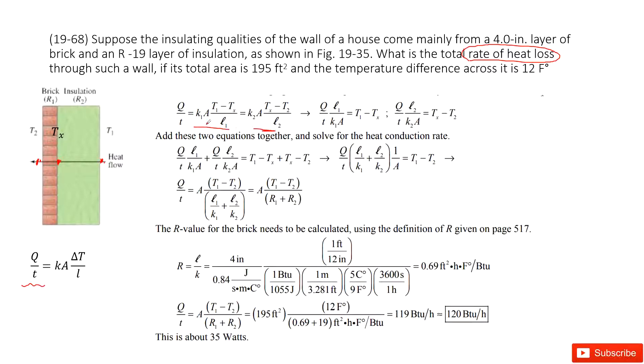We can solve these two equations and get Q divided by t equals this function. In this function, A is the surface, T1 and T2 is the temperature difference, and the bottom part is like a constant: L1 divided by K1 plus L2 divided by K2.